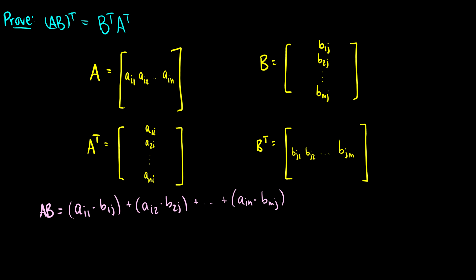Then when we take the transpose, I said that we flip the i's and j's. So now this becomes A_1i times B_j1 plus A_2i times B_j2, all the way up to A_ni times B_jm.